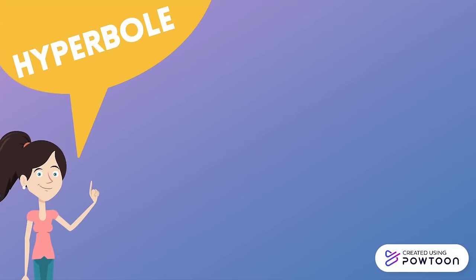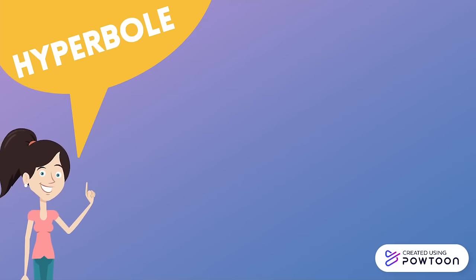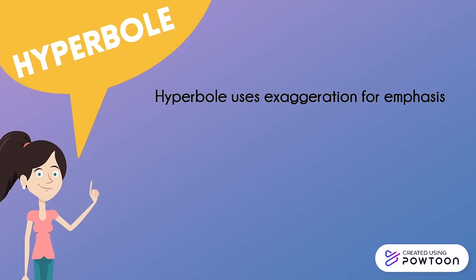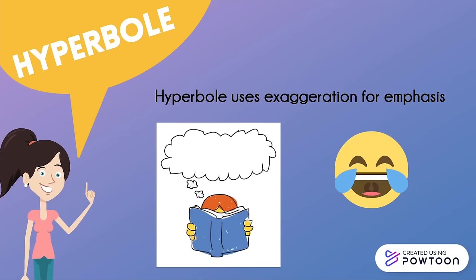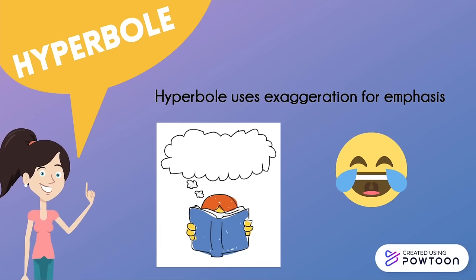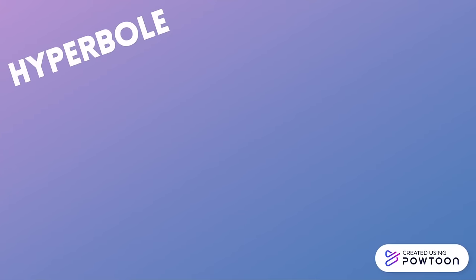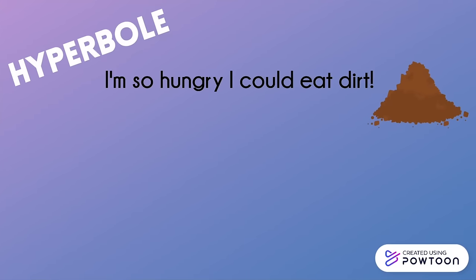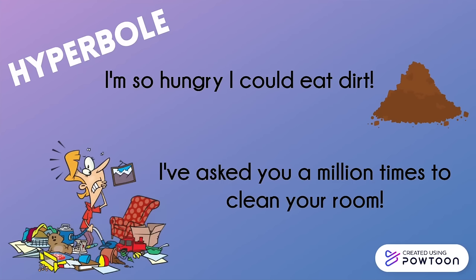Our final figurative language type for this video is hyperbole. It uses exaggeration for emphasis and to intensify an image in the reader's mind. It is often used with humour and it isn't meant to be taken literally. Hyperbole is another figurative language device used in our daily speech. Some examples include 'I'm so hungry I could eat dirt' and 'I've asked you a million times to clean your room.'